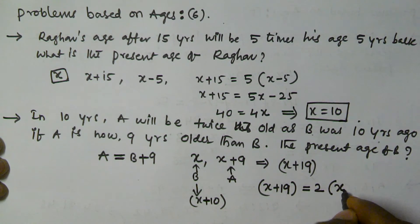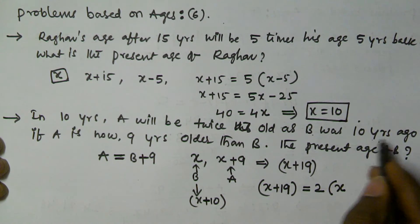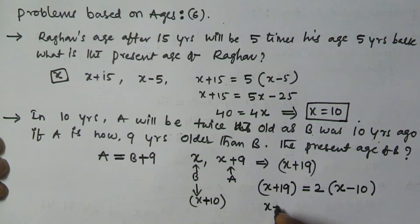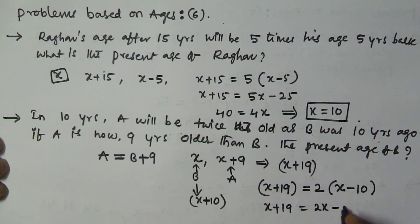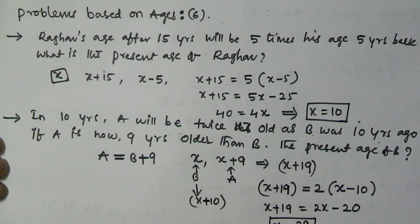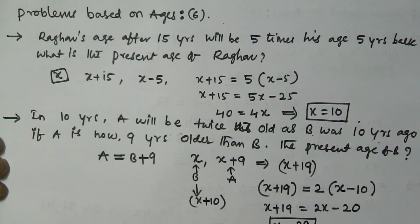The current age of B is x, so 10 years ago B's age was x minus 10. Therefore: x plus 19 is equal to 2 times (x minus 10), which gives x plus 19 equals 2x minus 20. Solving this, x is equal to 39. So the present age of B is 39 years.